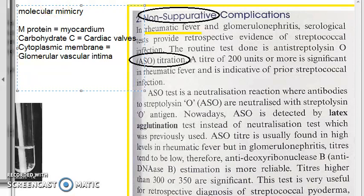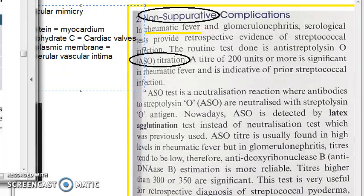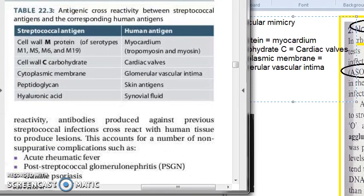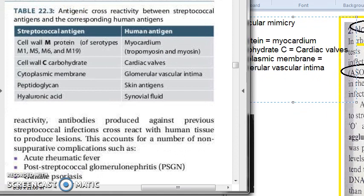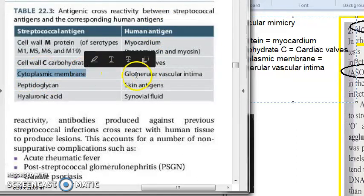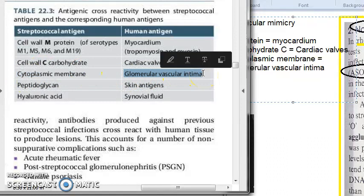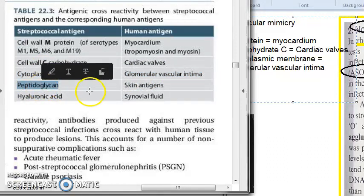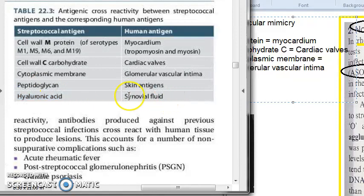Let me show you the textbook itself. You can see here: the M protein is so similar to the myocardium; the C carbohydrate is so similar to the cardiac valve; the cytoplasmic membrane is similar to glomerular vascular intima; the peptidoglycan to our skin antigens; and hyaluronic acid to the synovial fluid.